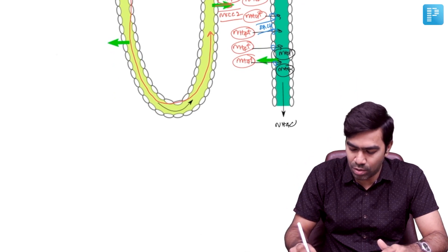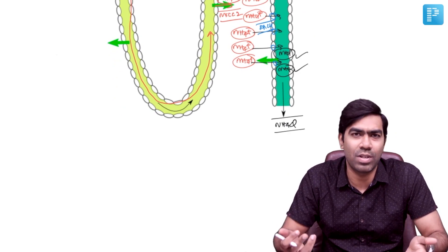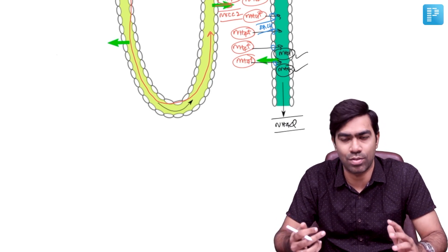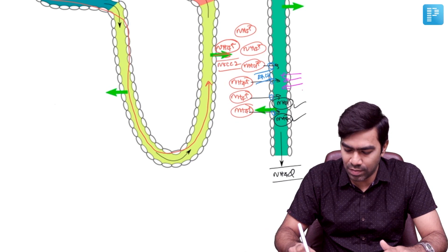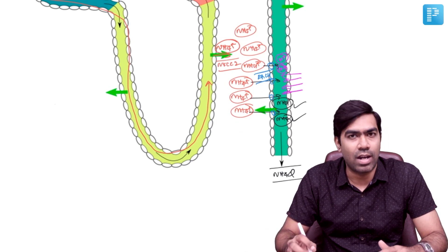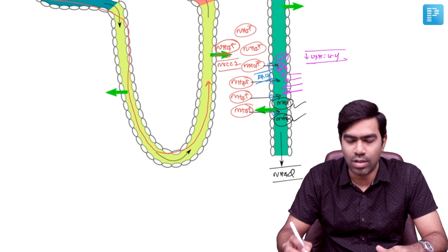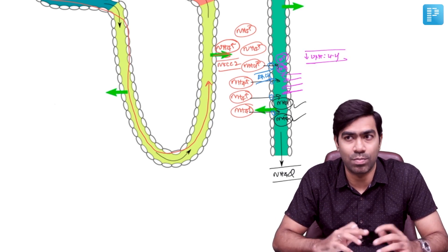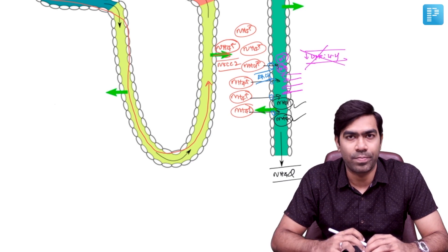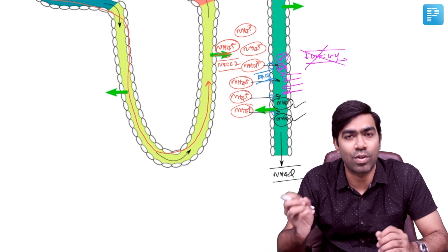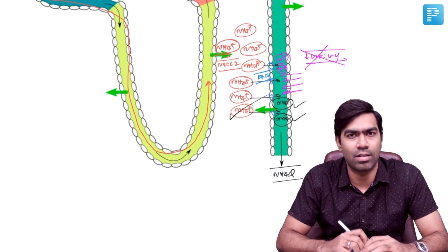Why does ammonium excretion help in metabolic acidosis? In metabolic acidosis, there is massive H+ production and excretion in the distal nephron. There is a danger that urinary buffers will become saturated and urine pH will reach a limiting value of 4.4 relatively quickly. Ammonium secretion prevents urine pH from reaching 4.4, allowing H+ excretion to continue unimpeded.